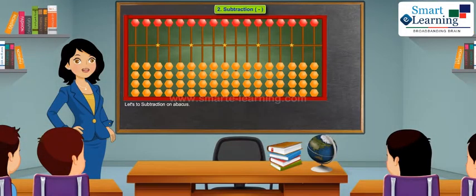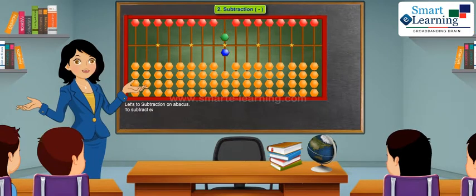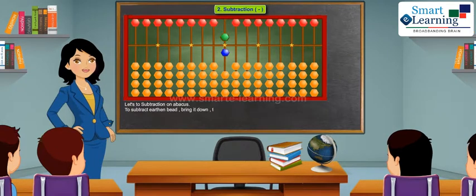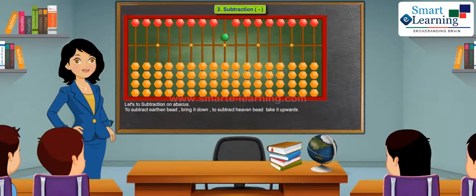Let's do subtraction on abacus. To subtract earthen bead, bring it down. To subtract heaven bead, take it upwards.